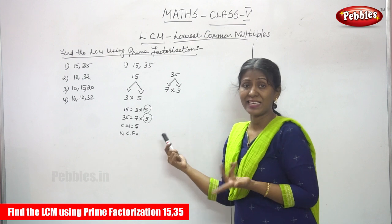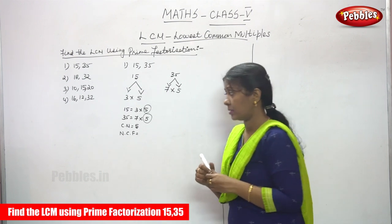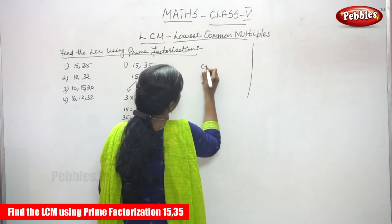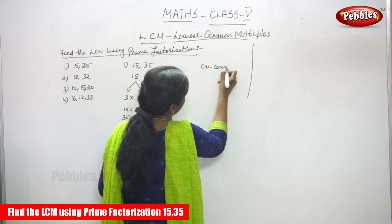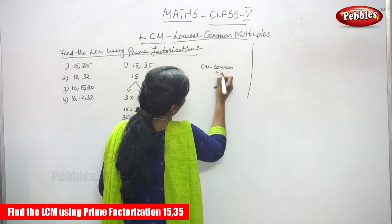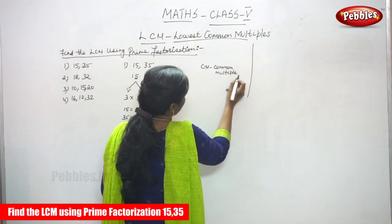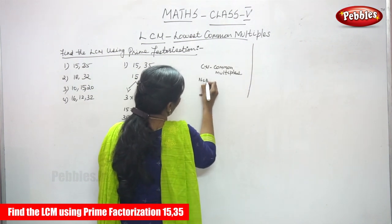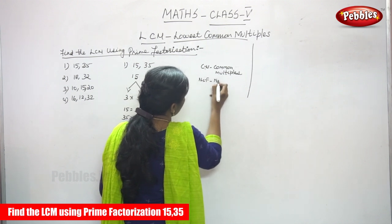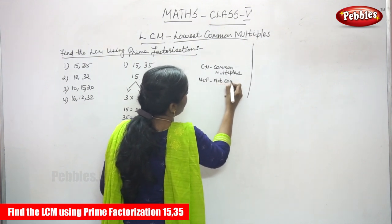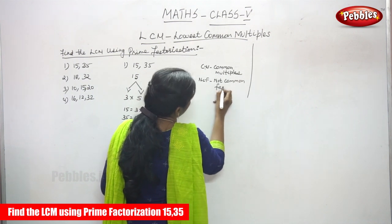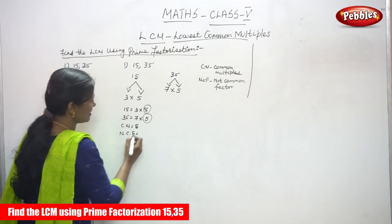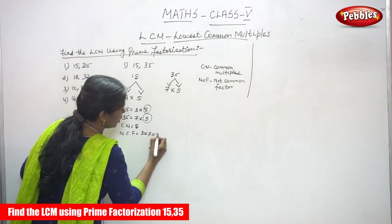NCF means not common factor. What are the not common factors? That is 3 and 7. So, 3 into 7 gives you 21.